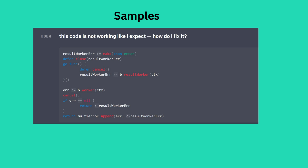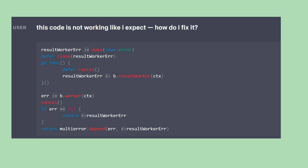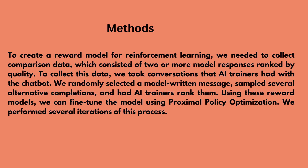User: Just part of it — the error never surfaces. I think there is something wrong with the channel. Chat: It's difficult to say without more information about what the code is supposed to do and what's happening when it's executed. One potential issue is that the ResultWorker channel is never closed, which means the code could potentially hang if the ResultWorker channel is never written to. This could happen if bResultWorker never returns an error, or if it's cancelled before it has a chance to return an error. To fix this, you could close the ResultWorker channel after writing to it — for example, you could add the following line of code after the line that sends the error on the channel.